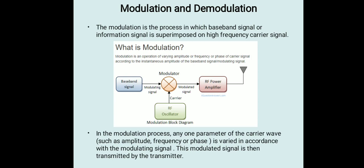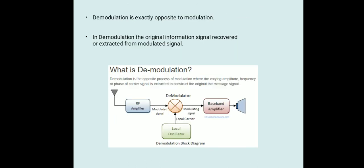The baseband signal is modulated with the help of a modulator, which creates a modulated signal transmitted through the transmission medium — it may be wired or wireless. If the signal is transmitted through wireless communication then it must consist of an antenna. In the modulation process, any one parameter of the carrier signal — that is, amplitude, frequency, or phase — varies in accordance with the magnitude of the modulating signal. Demodulation is exactly the opposite process of modulation. In demodulation, the original information signal is recovered or extracted from the modulated signal — the varying amplitude, frequency, or phase of the carrier signal is extracted to construct the original message signal.